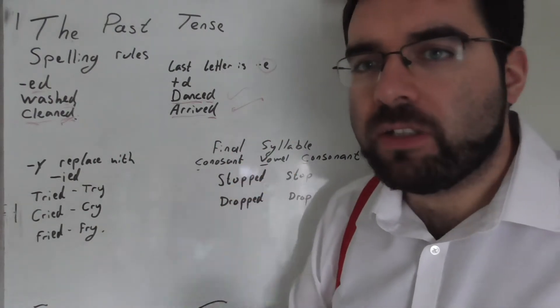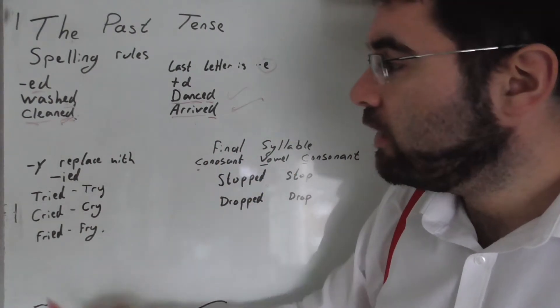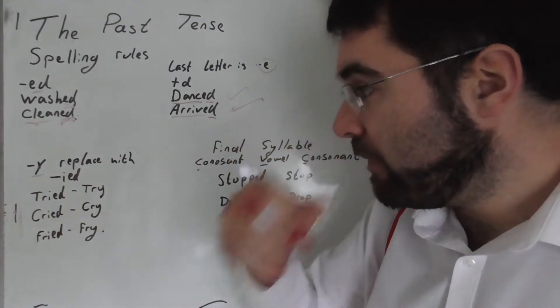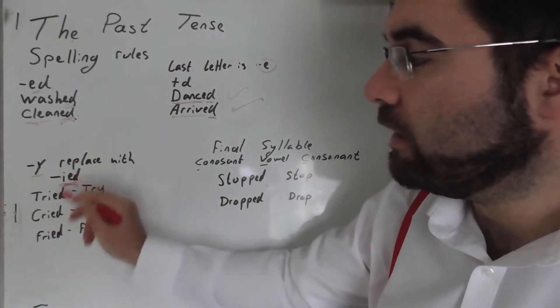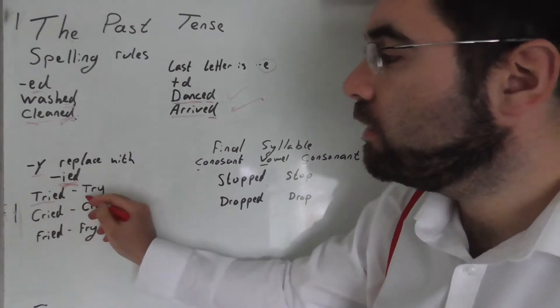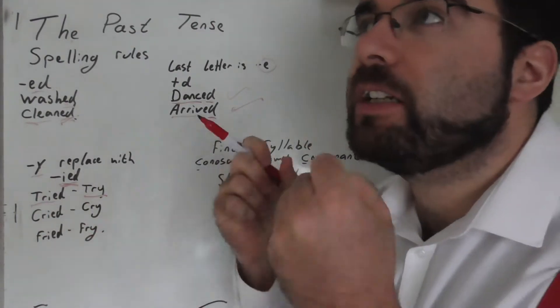Where it gets a bit different is with verbs that end with y. If it ends with y, we replace it with i-e-d. Try - I tried to tell him.